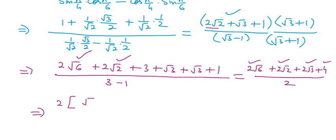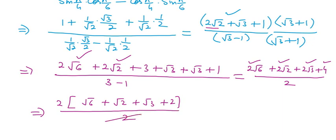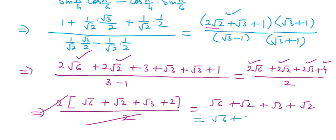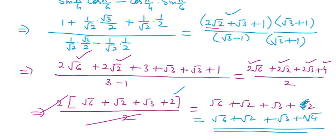Taking 2 common and canceling with the denominator, inside the bracket we have √6, √2, √3, and 2. This 2 may be written as √4. So our final result is √6 + √2 + √3 + √4, which is the right hand side. This confirms the value of cot(π/24) = √2 + √3 + √4 + √6.